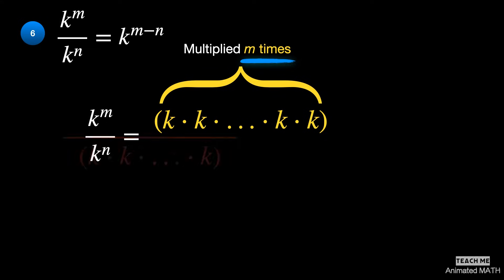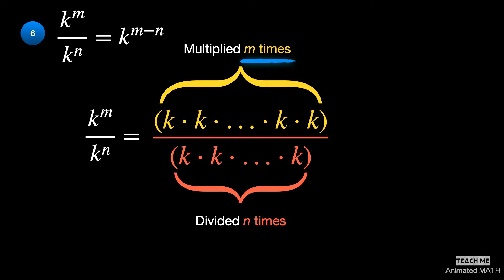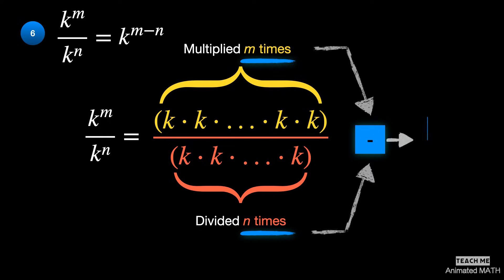Then decrease by n times because you are doing division. This will give you a grand total of m minus n times.